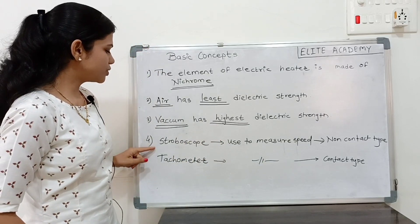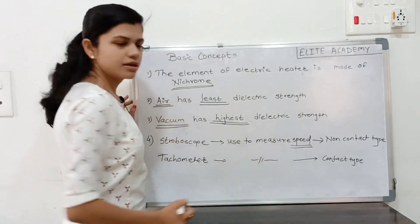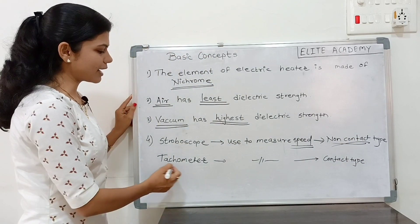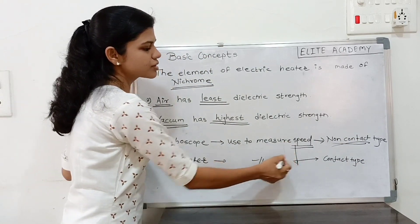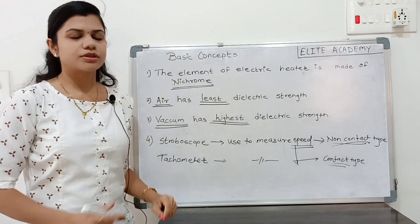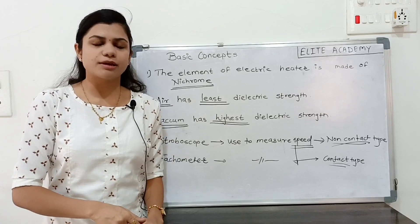The fourth point is a stroboscope. This measuring instrument is used to measure the speed. But it is a non-contact type. And tachometer also used to measure the speed. But it is a contact type. This point should be remembered because on these points, the MCQ may ask.